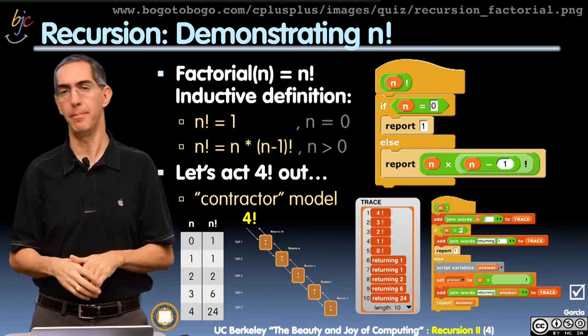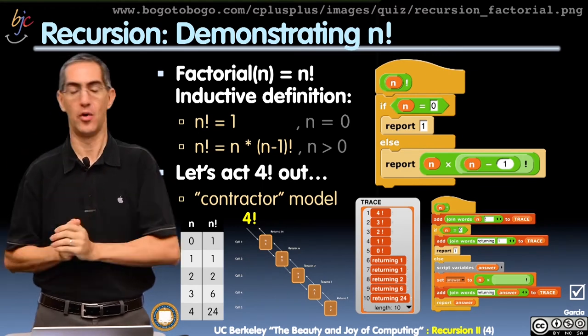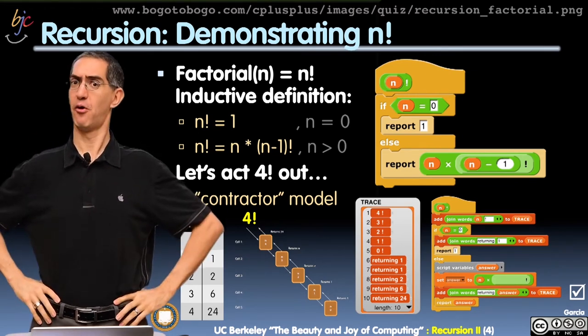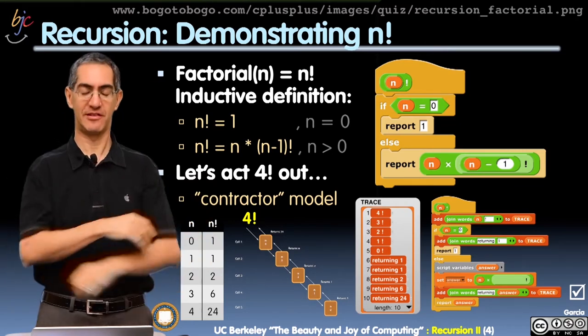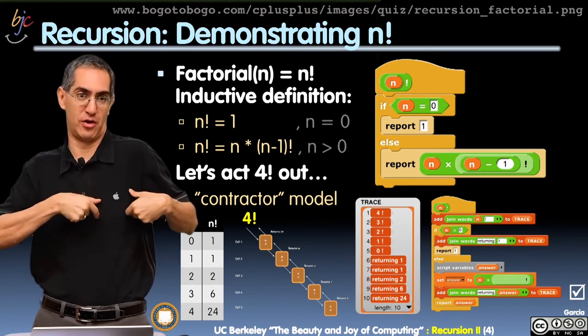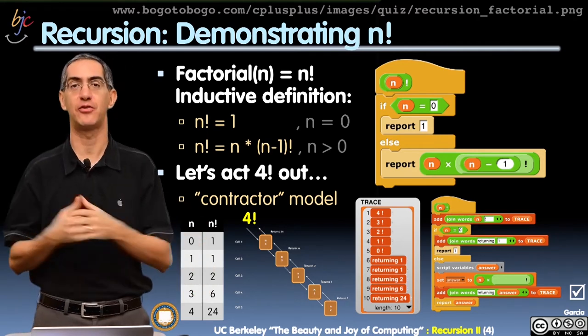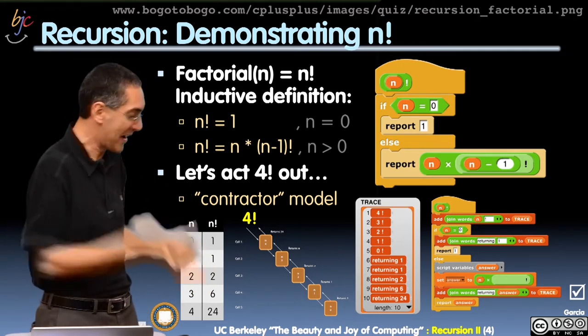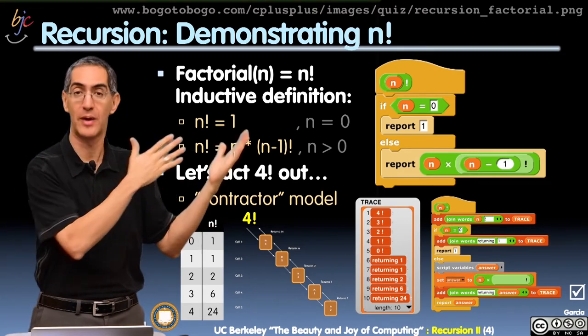So what we usually do, the students here locally have seen this in discussion, is you act this out. I say I would like 4 factorial. And I turn to the left, and there'd be somebody who's asleep. This is the person at the factorial factory, somebody who works in the factorial company. And you say, I'd like to hire somebody to do factorial, please wake up. So this is called the subcontractor model, where you're hiring people to wake up.